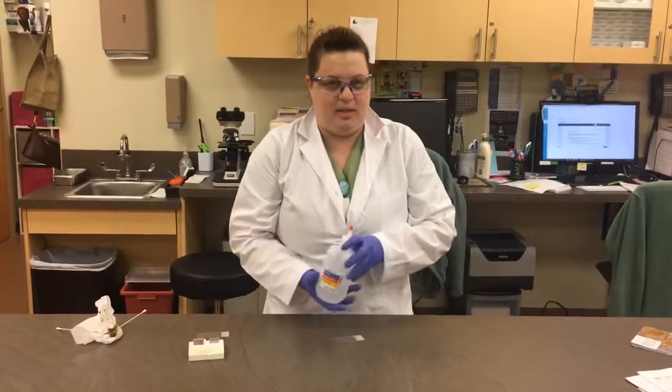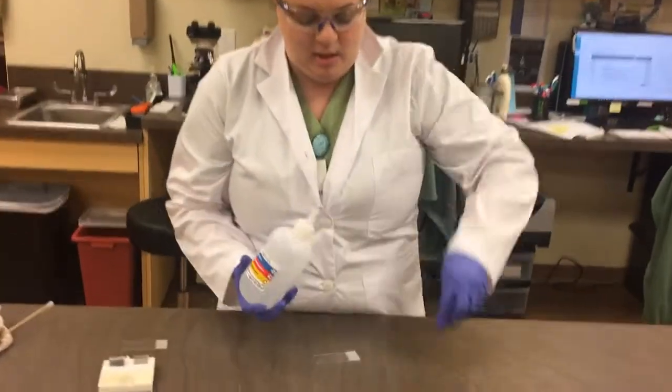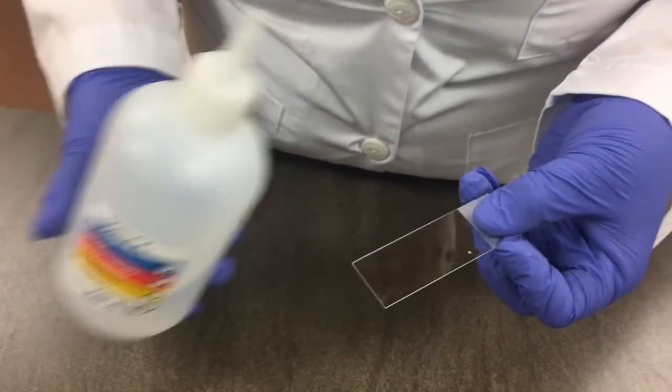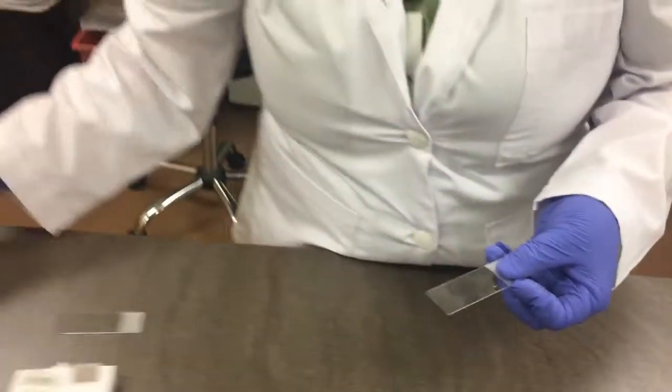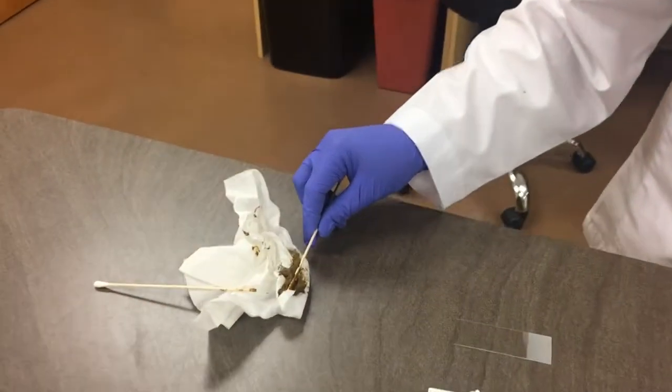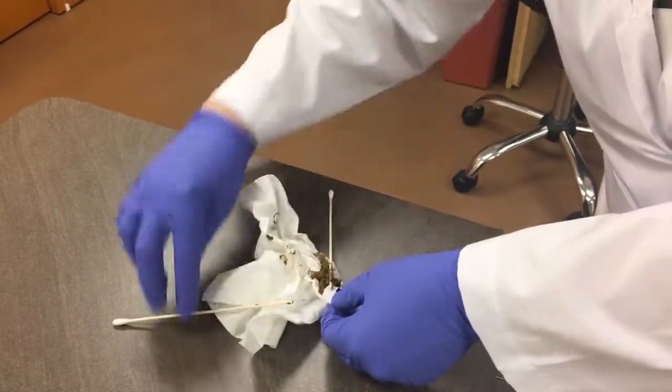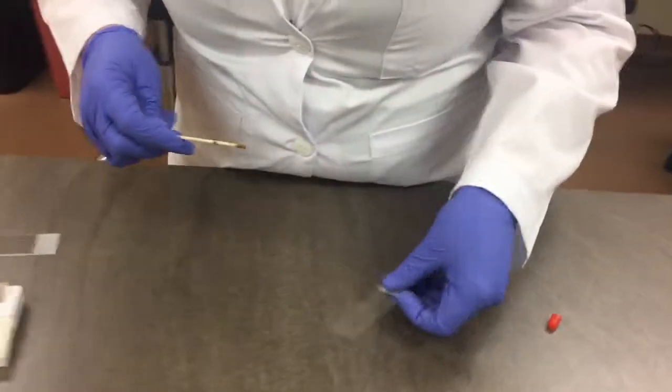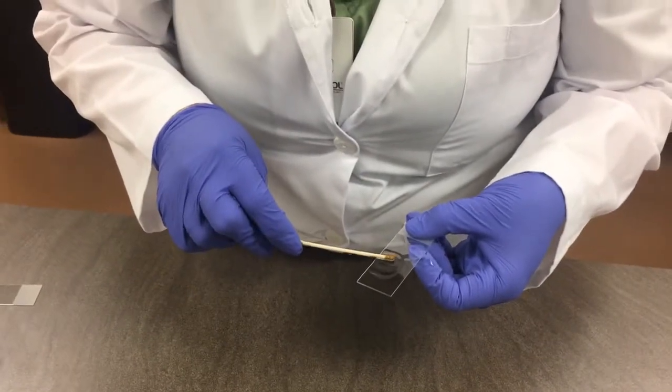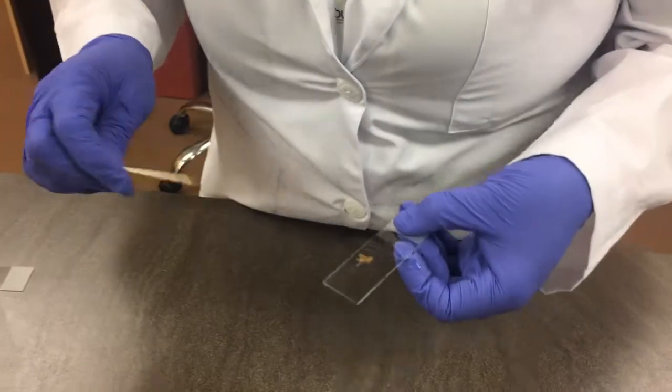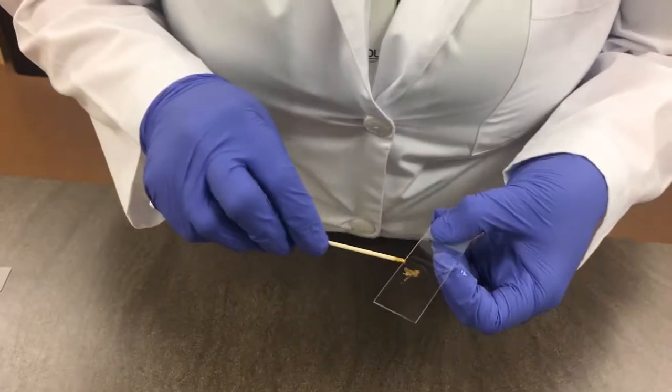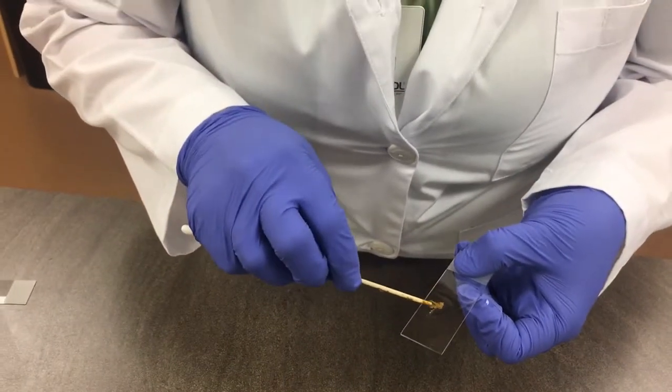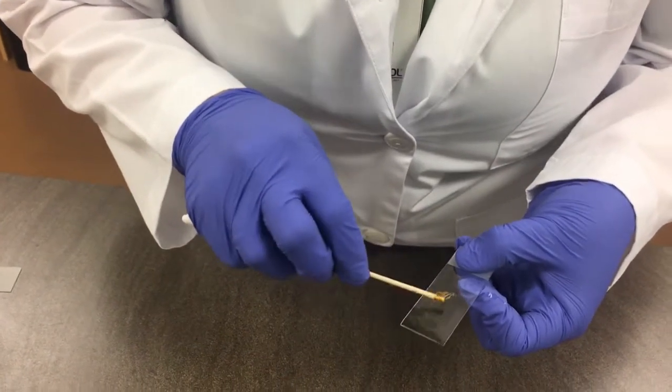So what we're going to do is place a drop of saline onto our microscope slide. And then we're going to take a very small amount of feces and add it onto our drop of saline. And then we're going to take the tip of this cotton tip applicator and make a slurry.